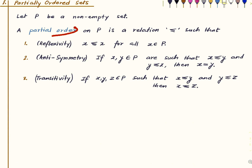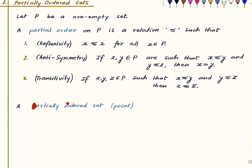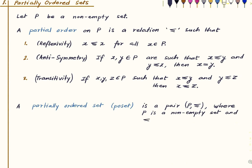Any relation satisfying these three properties is called a partial order on P. A partially ordered set, or PoSet, is a pair (P, ≤) where P is the non-empty set and ≤ is a partial order on P.